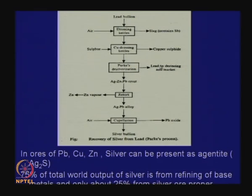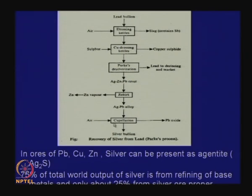The rest of the lead will go for desilvering to market and from that crust, zinc can be separated out by volatilization. We are left with a lead-zinc alloy and after cupellation, silver bullion is found. So much of silver comes from the processing of lead, which is one of the main sources.